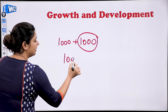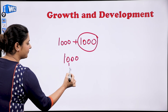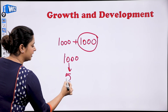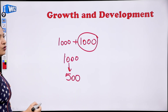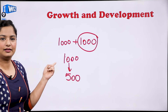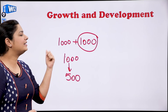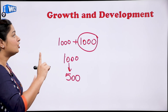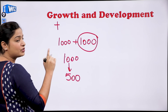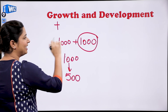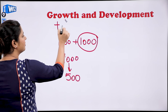For example, suppose a salary is one thousand and it is reduced by 500 — it becomes 500. Can we say that is growth? We can say it is growth, but it is negative growth. So growth can be both positive and negative.